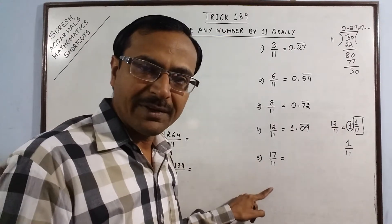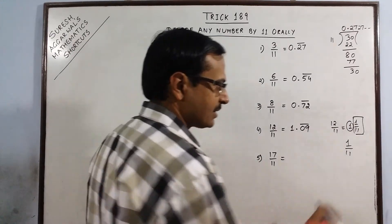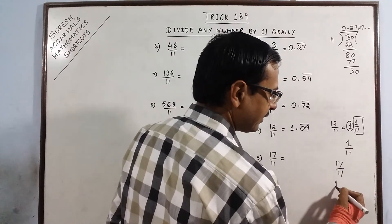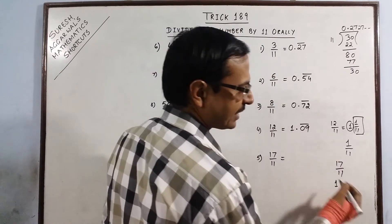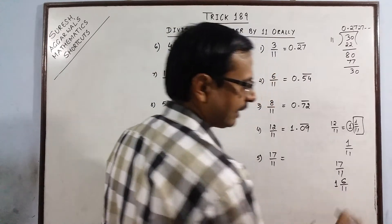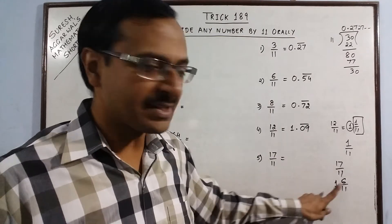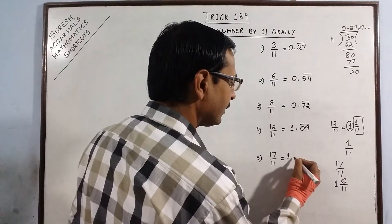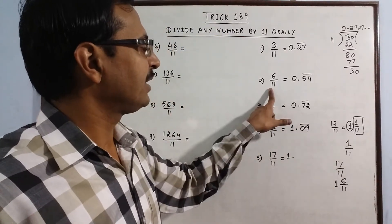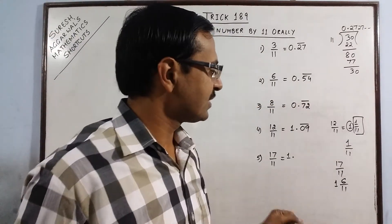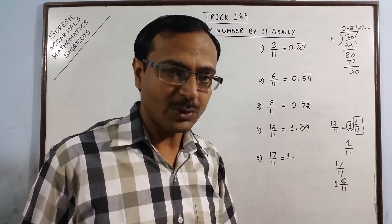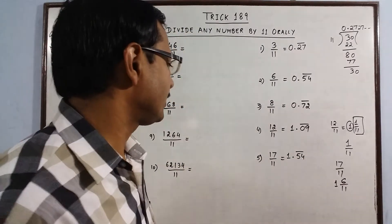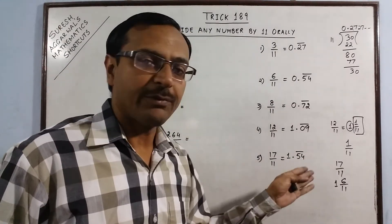Likewise, 17 upon 11. Converting to mixed fraction: 11 ones are 11, and 17 minus 11 is 6, so we get 1 and 6/11. We write 1 point, and now for 6/11, multiply the numerator 6 by 9 to get 54. So the decimal representation of 17/11 is 1.54 bar — that is 1.545454...